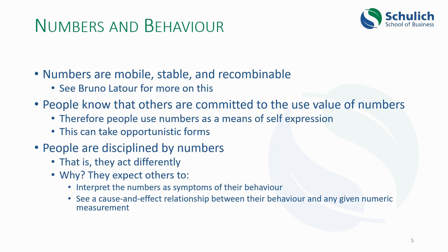Nonetheless, people are disciplined by numbers — they act differently when they know they're being measured. They expect that other people are going to interpret the measurements as symptoms of their behavior, and expect people to think there's a cause-and-effect relationship between their behavior and the numeric measurement. So whether or not you think grades are a good measure of your ability as a student, the school and some employers might look at your grades as an indication of what kind of student you are. Even if you highly doubt the relationship, other people don't — they act as if those numbers have some objective meaning.